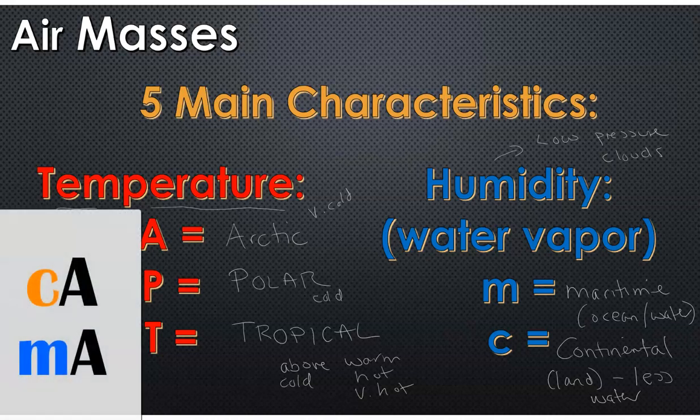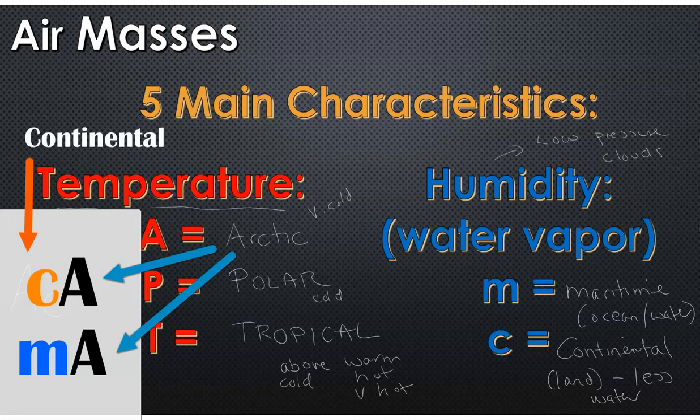How do we write this? We combine the temperature and water. For example, if it's going to be an air mass that's very cold and dry, you would have the A for Arctic and the small C for continental. Or if it's really cold but over water like Hudson Bay, it would be A for Arctic, being very cold, and the small M for maritime, which would dictate a lot of water.